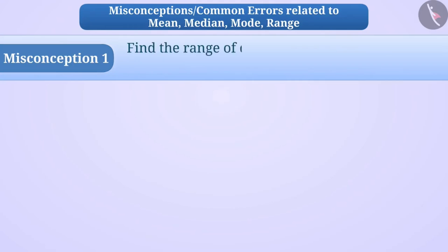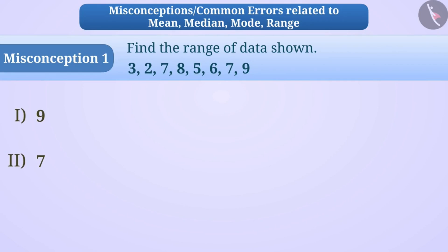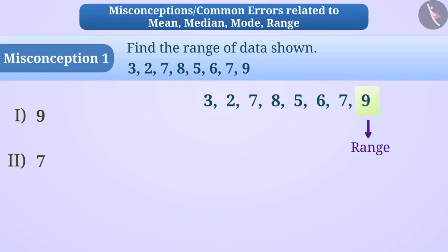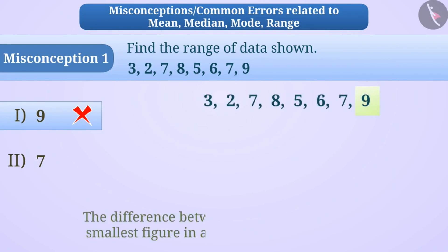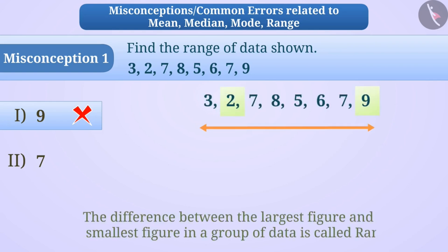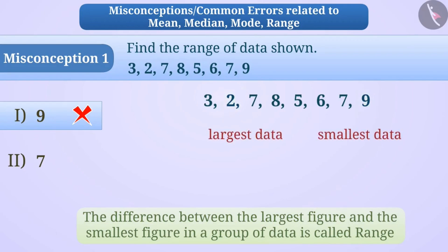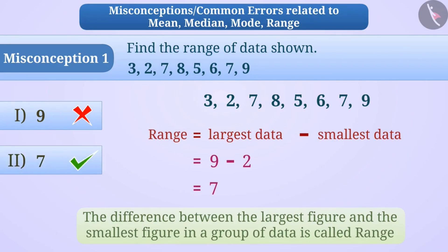Misconception 1: Find the range of data shown. Some children have the misconception that the largest figure in a group of data is called the range — but this is wrong, so option 1 is the wrong answer. The difference between the largest and the smallest figure is called the range, obtained by subtracting the smallest from the largest. So the range is 9 − 2 = 7, making option 2 the correct answer.